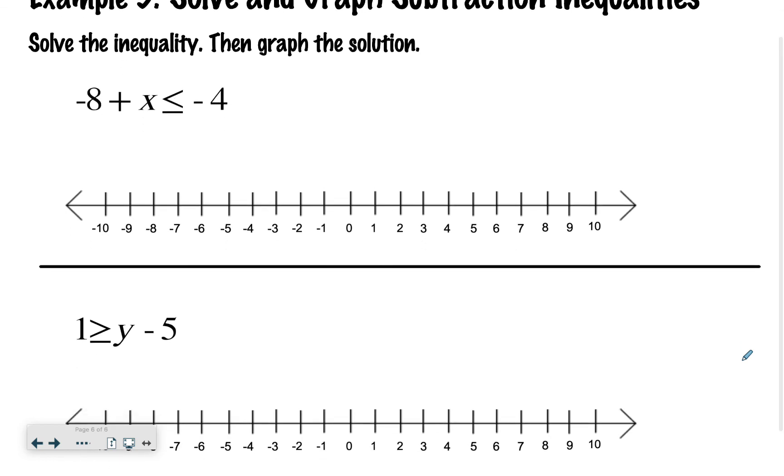Now let's practice solving just using subtraction this time, or solving inequalities that involve subtraction. So here I have negative 8 plus x is less than or equal to negative 4. So to get x by itself, I'm going to say plus 8 plus 8. x is less than or equal to 4. So I'm going to do a filled-in circle at 4.